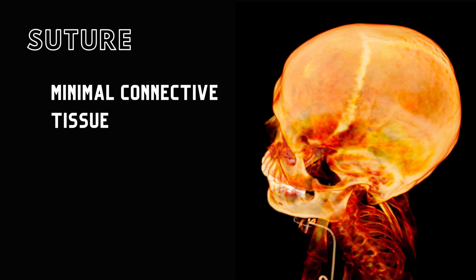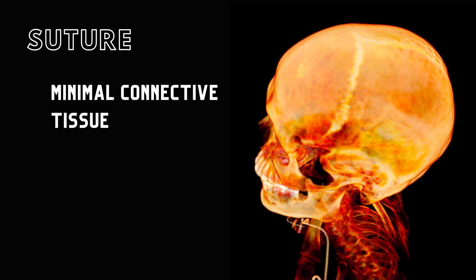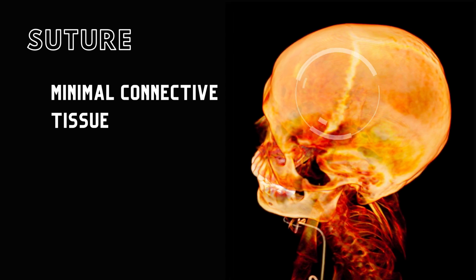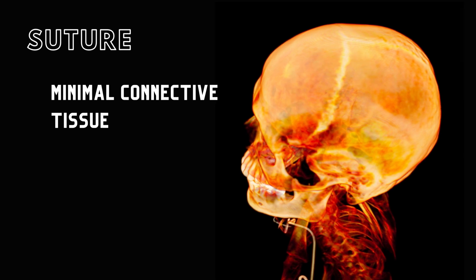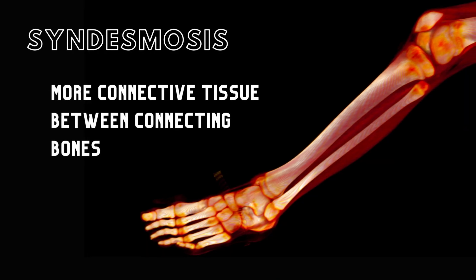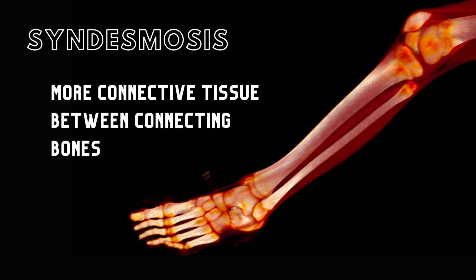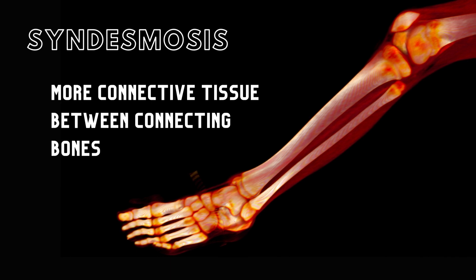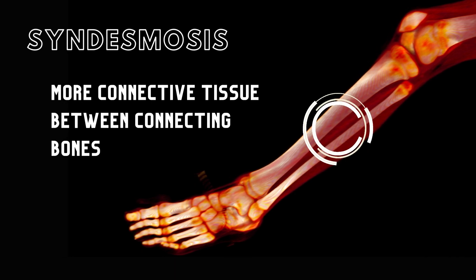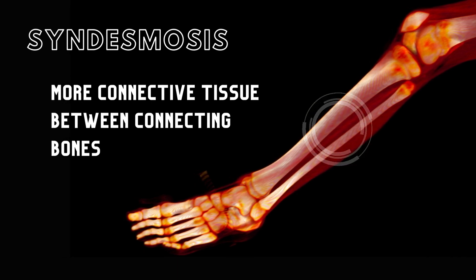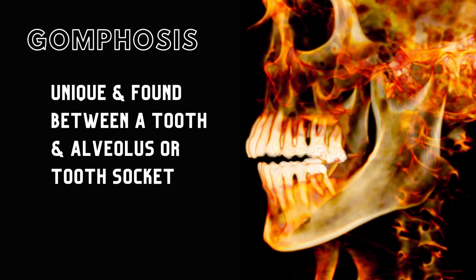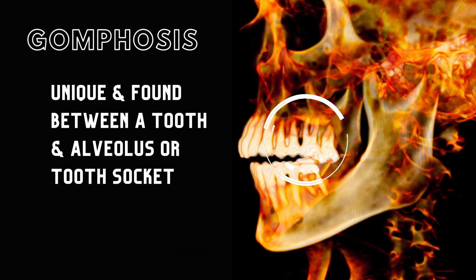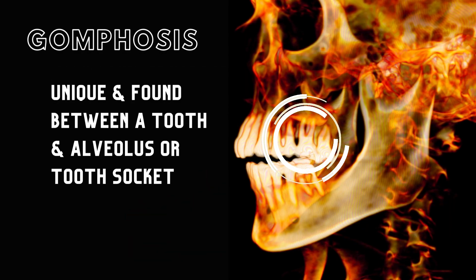Suture joints have minimal connective tissue; the most common example of this type of joint are the bones of the cranium. In syndesmosis joints, there is more connective tissue between connecting bones, and an example would be the tibia and the fibula. Gomphosis joints are unique and found between a tooth and alveolus, or tooth socket.